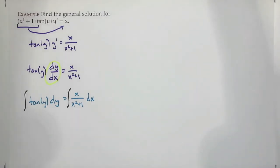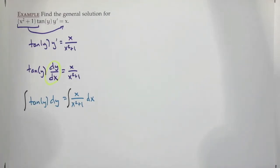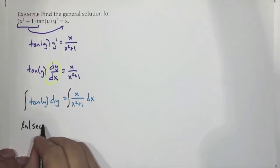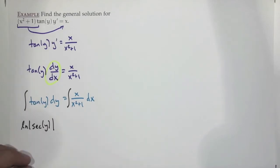One over y²+1 would be the derivative of arctangent; secant tangent is the derivative of secant; natural log of |sec + tan| is the antiderivative of secant; secant squared is the derivative of tangent. The answer is log|sec(y)|. And if you forget that on a quiz, flip it over — there's a formula sheet.